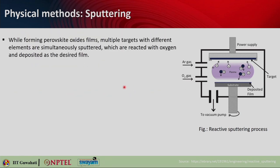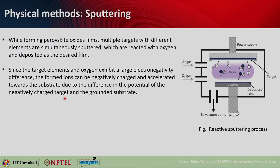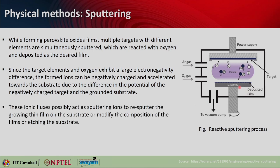While forming perovskite oxide films, multiple targets with different elements are simultaneously sputtered, which are reacted with oxygen and deposited as the desired film. Since the target elements and oxygen exhibit a large electronegativity difference, the formed ions can be negatively charged and accelerated towards the substrate due to the difference in potential of the negatively charged target and the grounded substrate. These ionic fluxes possibly act as sputtering ions to re-sputter the growing thin films onto the substrate, or modify the composition of the films, or etch the substrate.